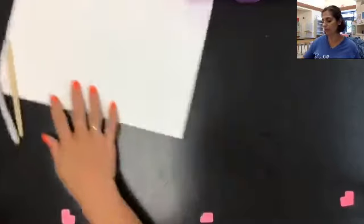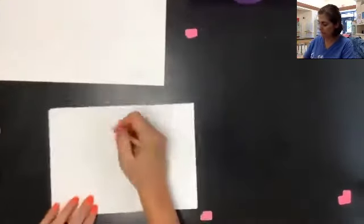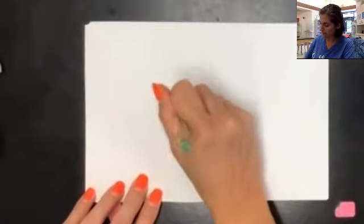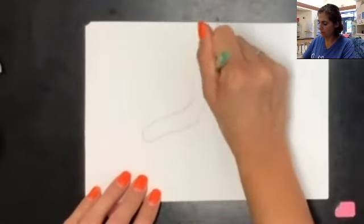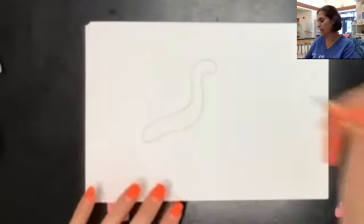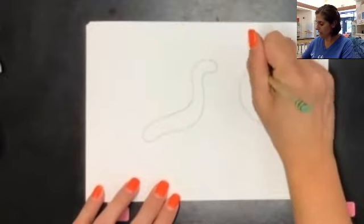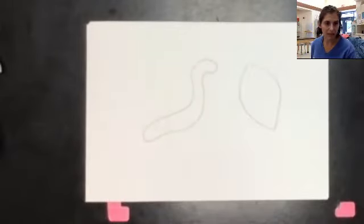If you remember from the first part of the lesson, organic shapes are shapes that are kind of wiggly and we usually call them by names of what they look like. So an example would be a shape like this and we would call that a worm shape, or a shape like this and we might call that a leaf shape.